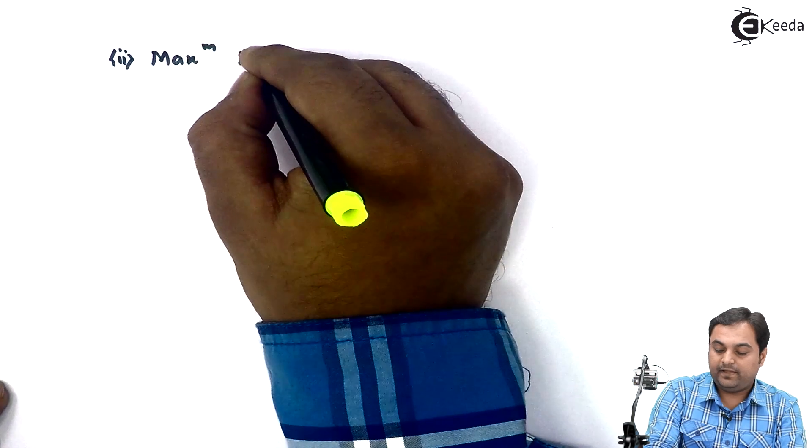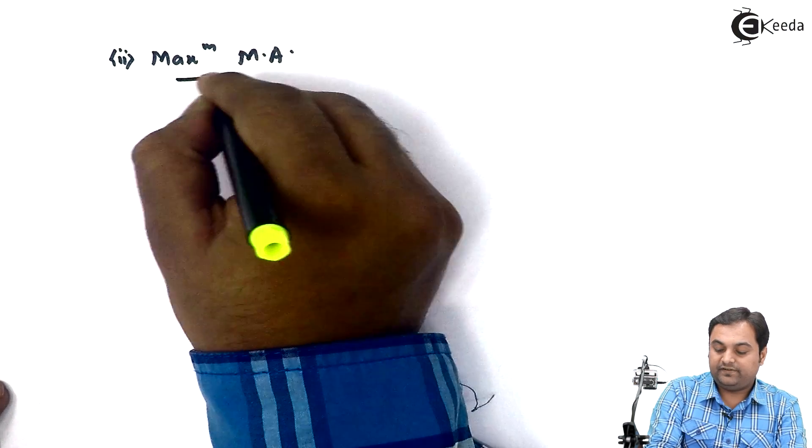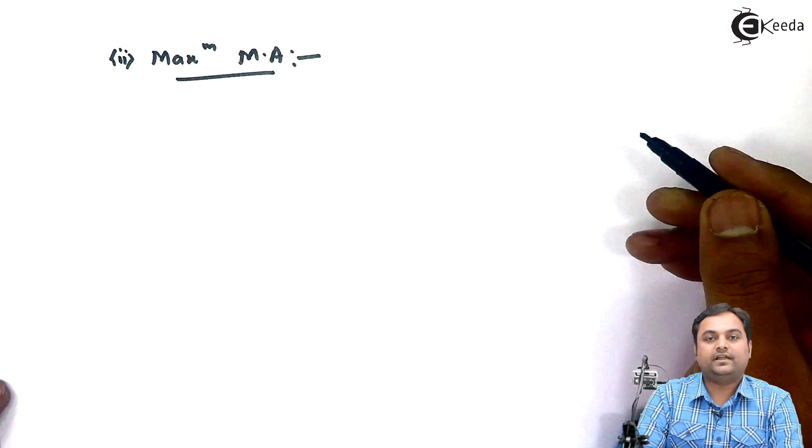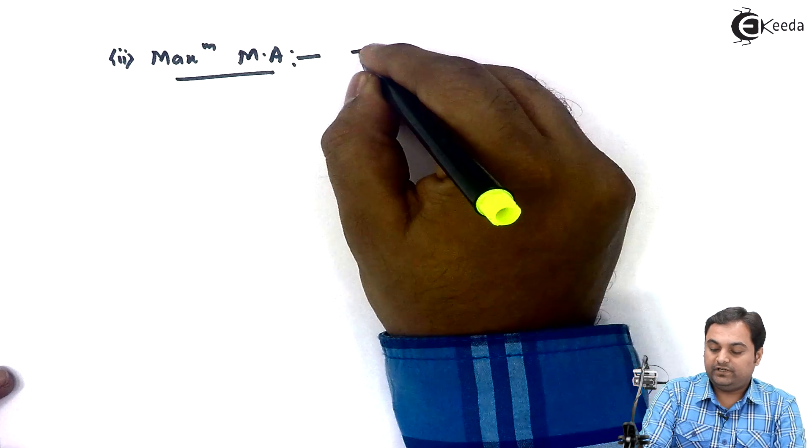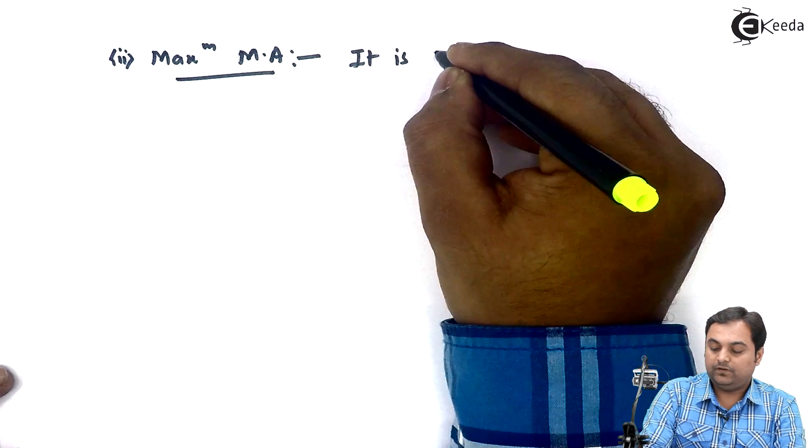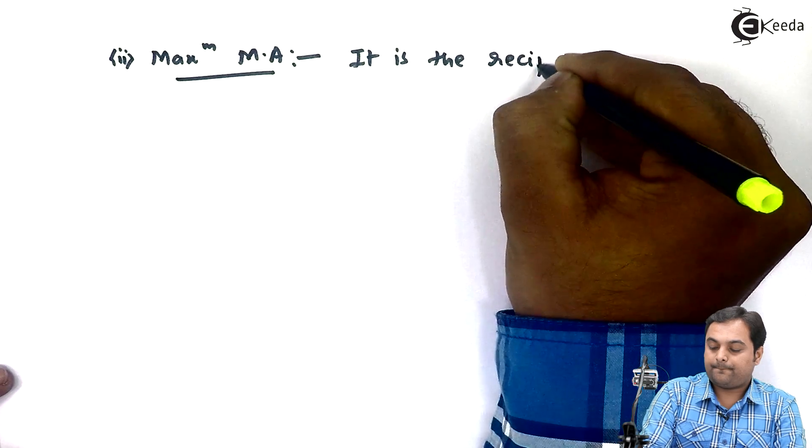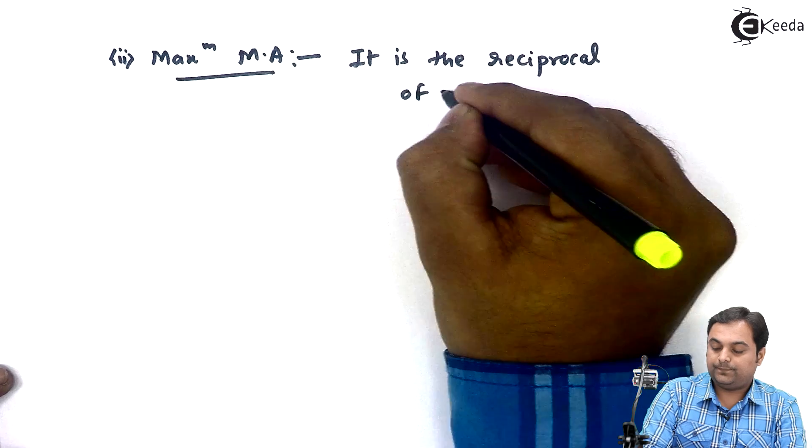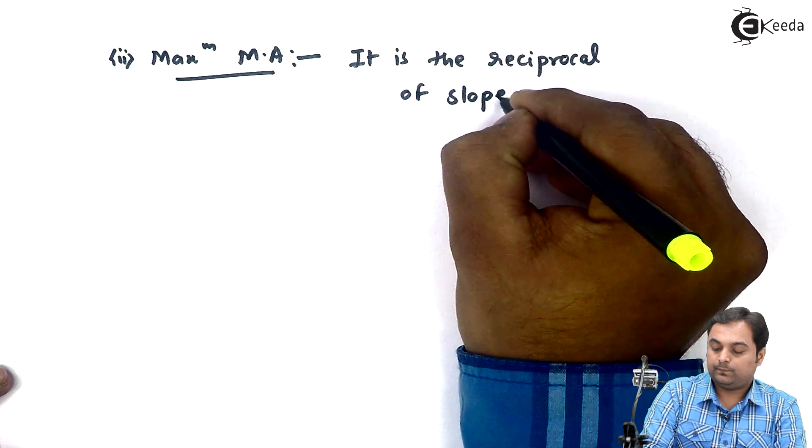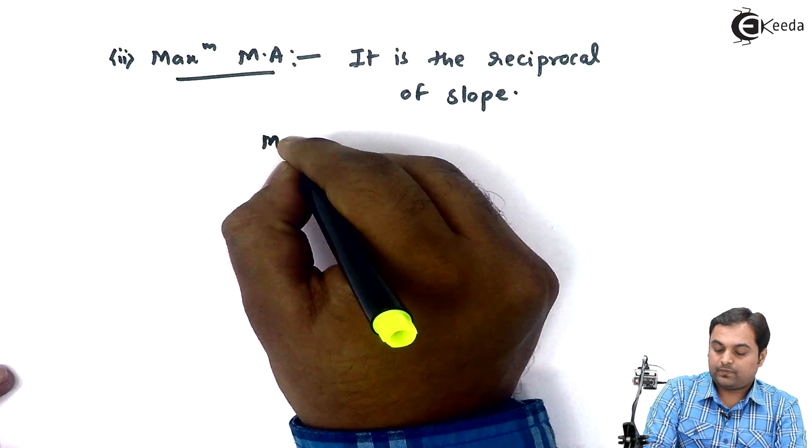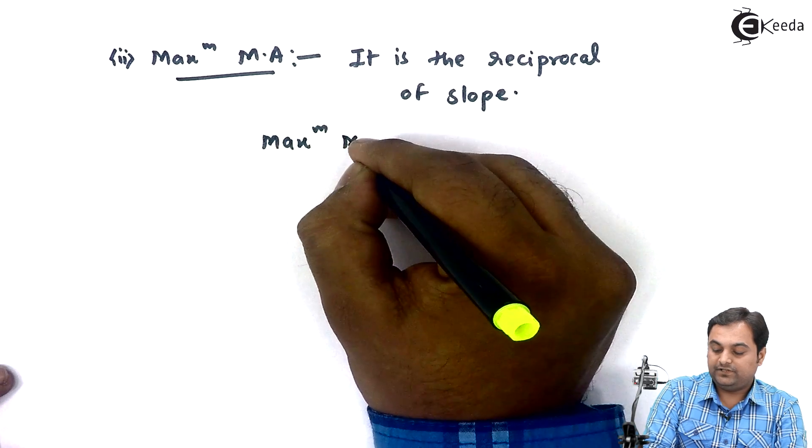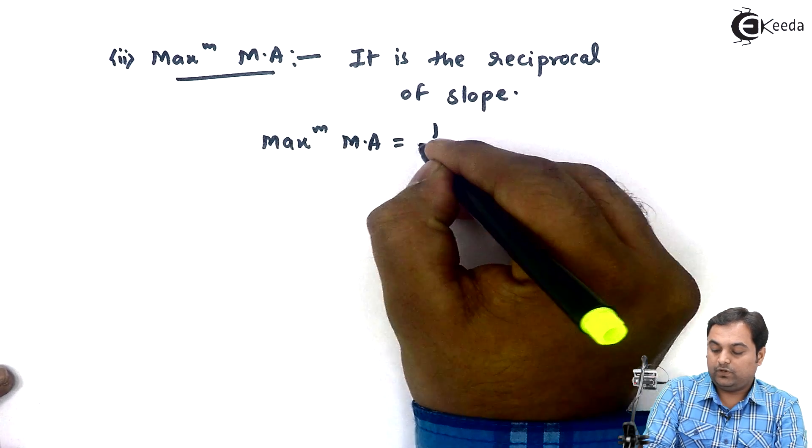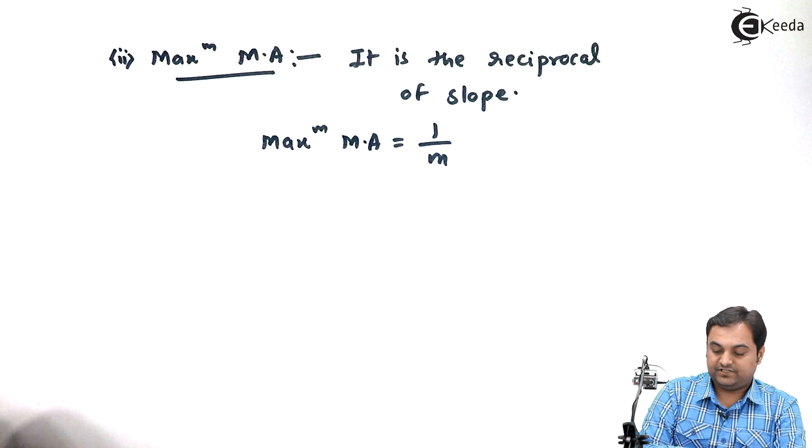I'll write it as maximum MA because wherever I write MA it indicates mechanical advantage. So it is the reciprocal of slope. It means maximum mechanical advantage is equal to 1 upon M, that is it is the reciprocal of slope and it also doesn't have a unit.